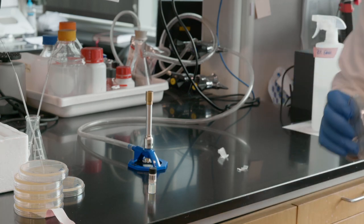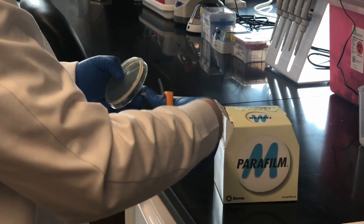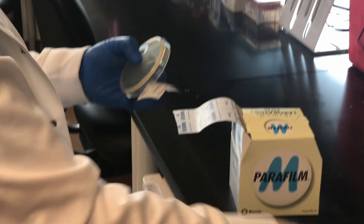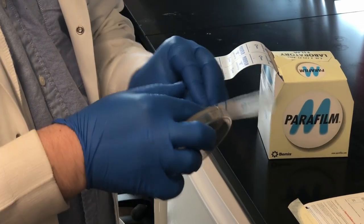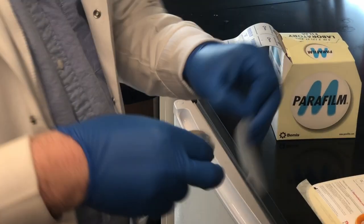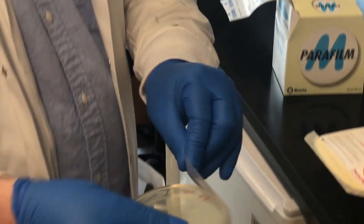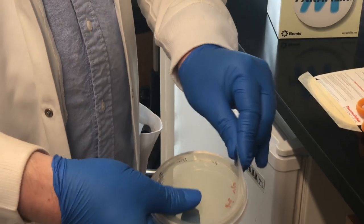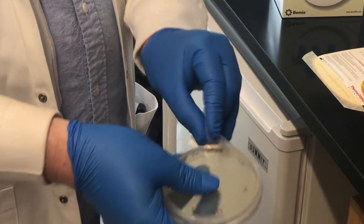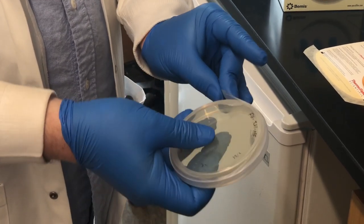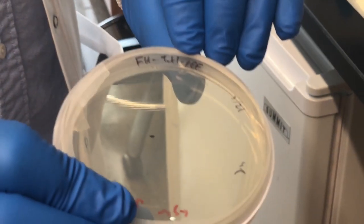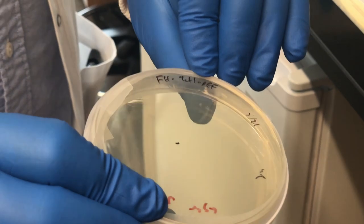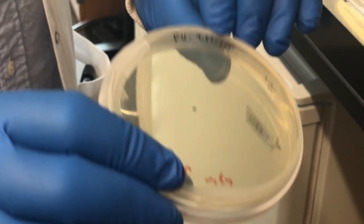Before we do that, we just want to maintain sterility by sealing this up with paraffin strips. This just gets wrapped all the way around the edge here. And if you look just right, you might be able to see some of the streaks in the wire loop on the gel.